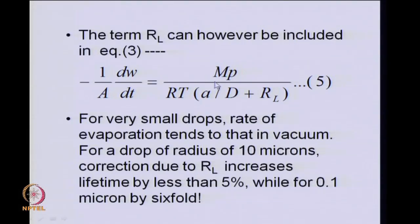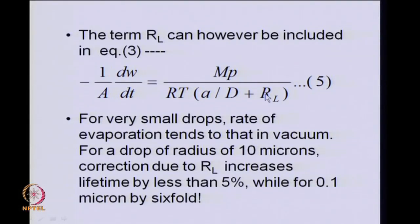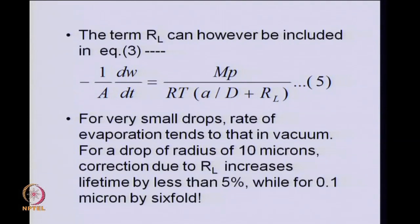When the drop becomes about a tenth of a micron, the resistance in the liquid will cause an increase in the lifetime of the drop by a factor as high as 6. This is because in these final stages, when the radius of the evaporating drop becomes very small, the gas phase resistance has reduced so much that the liquid phase resistance can start controlling the magnitudes of the lifetimes. We will see that lifetimes of fine droplets can be of significance in certain effects and applications near the end of this lecture.